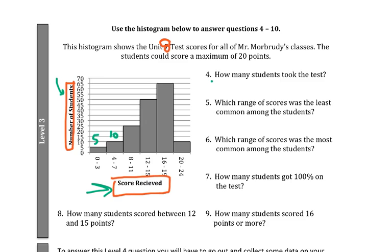10 students scored from 4 to 7. 25 scored here. 50 students here. 65 students here. And 10 students here. What we're going to want to do is just grab a calculator and we're going to add all those numbers together. If we add all those numbers together, I got 165.